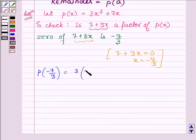So we have 3 times minus 7 upon 3 whole cube plus 7 into minus 7 upon 3, which is further equal to